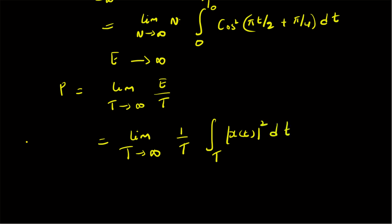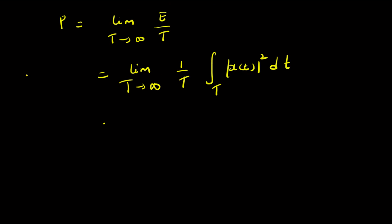Since x(t) is a cosine function — a periodic signal — it extends from minus infinity to plus infinity on both sides. We can rewrite this limit by writing T as 2T₁, where T₁ represents the length on one side (0 to infinity), and the energy is double the value on one half. So we rewrite the integral as the limit as T₁ tends to infinity of (1/2T₁) times the integral over T₁ of |x(t)|² dt.